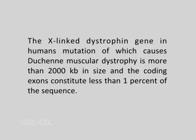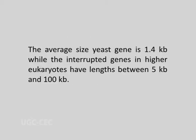For example, the X-linked dystrophin gene in humans, mutation of which causes Duchenne muscular dystrophy, is more than 2000 kb in size and the coding exons constitute less than 1 percent of the sequence. The average size of a gene is 1.4 kb while interrupted genes in higher eukaryotes have lengths between 5 kb and 100 kb. The variation in gene lengths is primarily due to variation in the length of introns, and evolutionarily related genes have similar organizations with conservation of at least some intron positions.